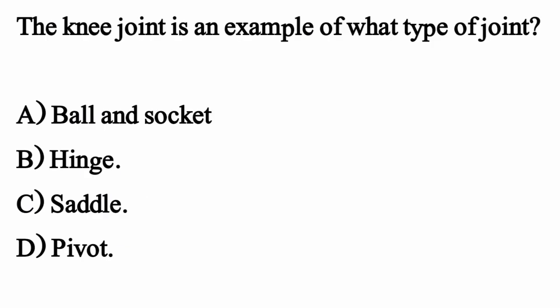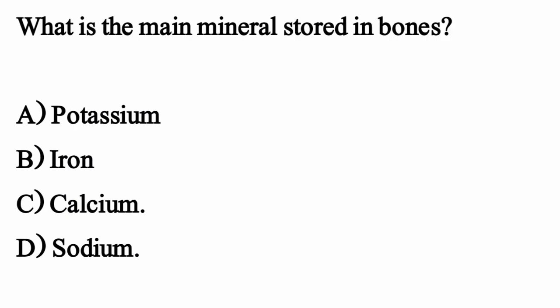What type of joint is the elbow? The correct option is Option B: Hinge joint. What is the main mineral stored in bones? The correct option is Option C: Calcium.